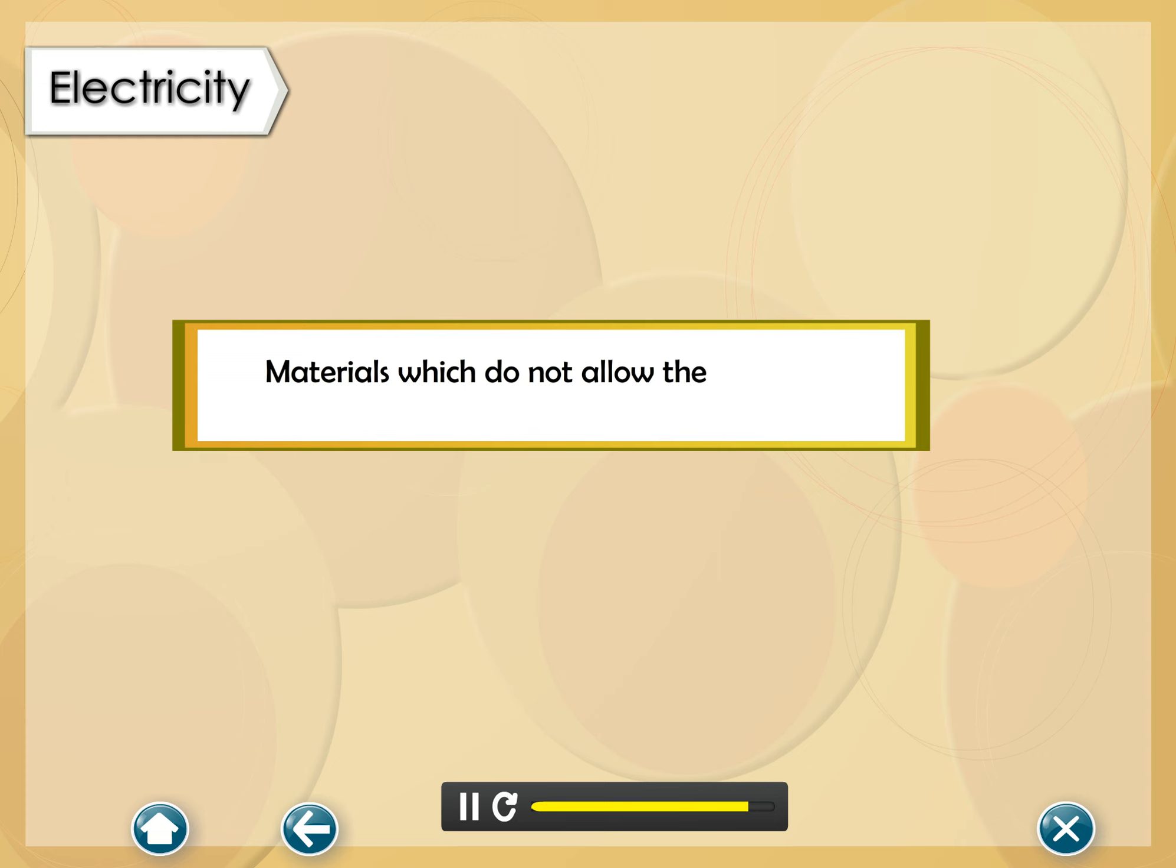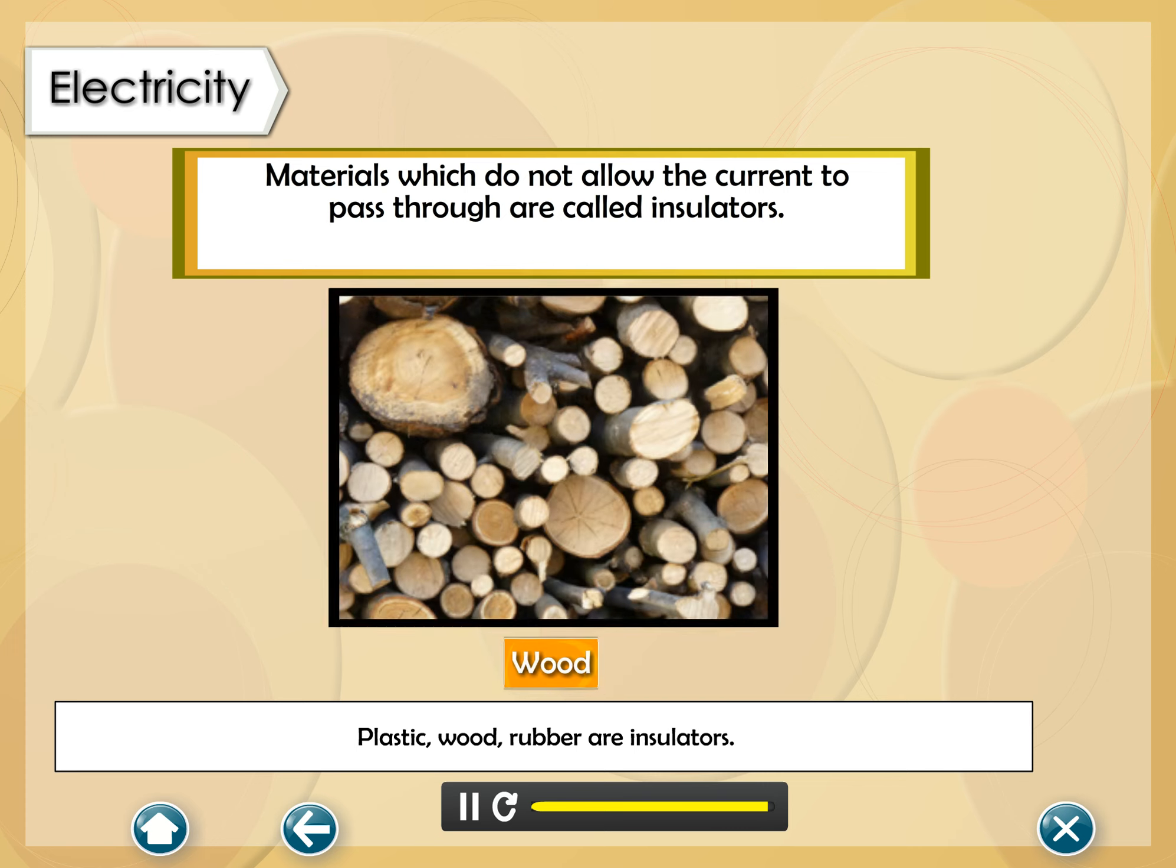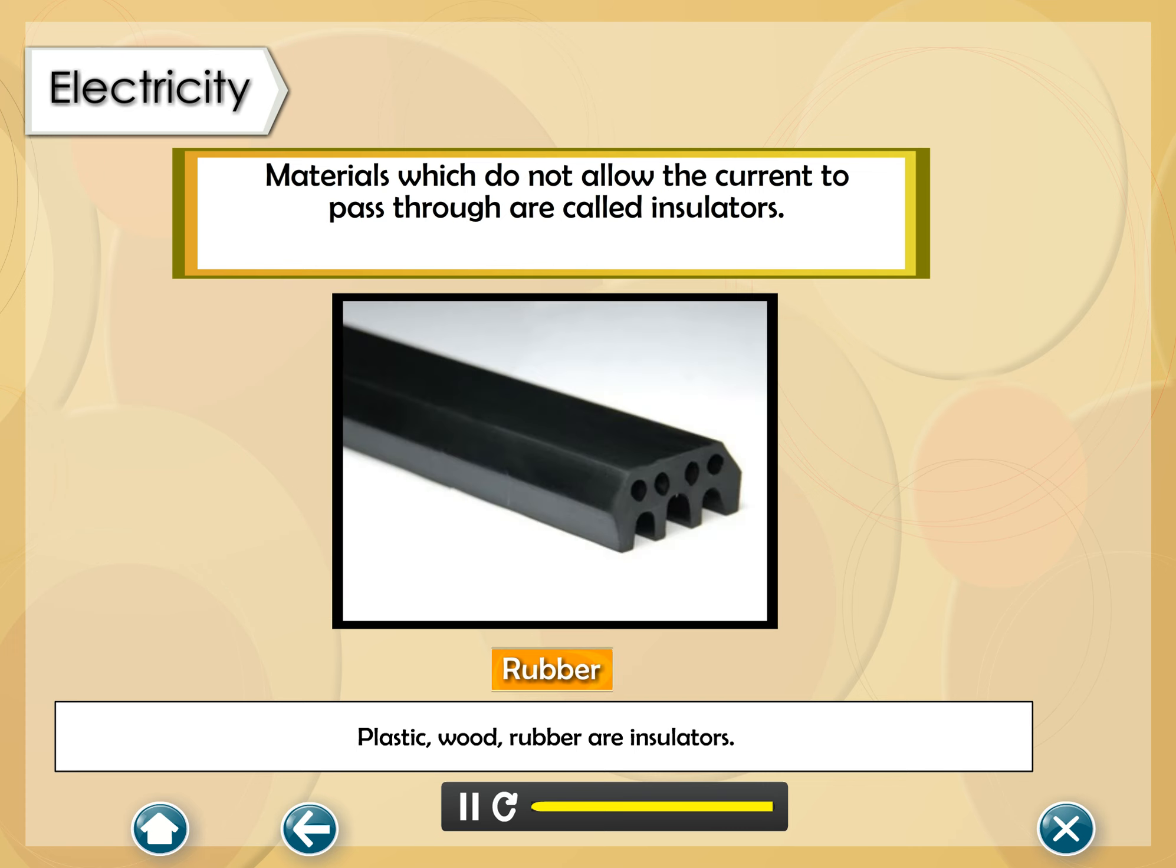Materials which do not allow the current to pass through are called insulators. Plastic, wood, rubber are insulators.